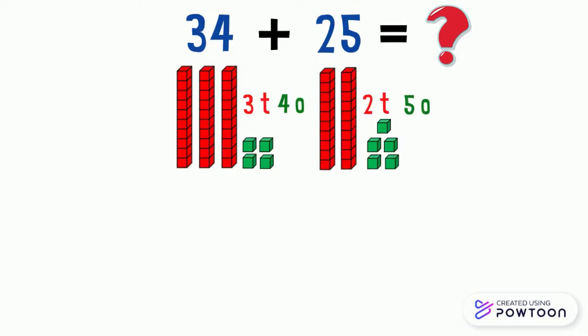To calculate mentally, it is enough to put the ones together and add them. Then, put the tens together and add them. Here, the ones are 4 and 5. If we add them, we will get 9.